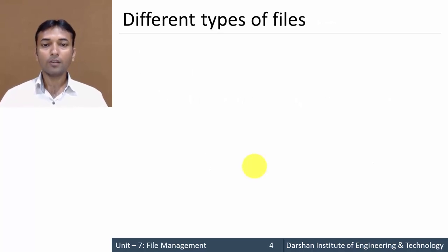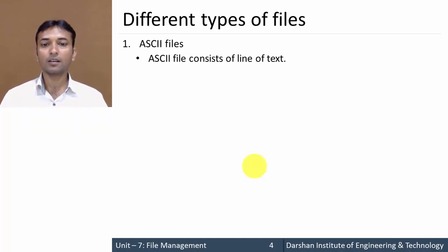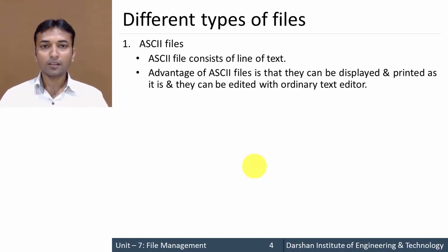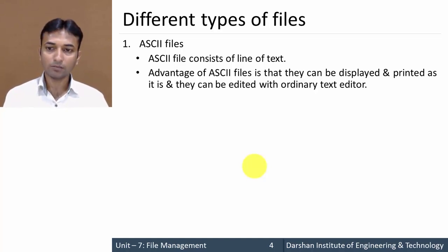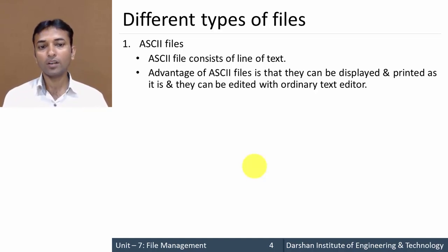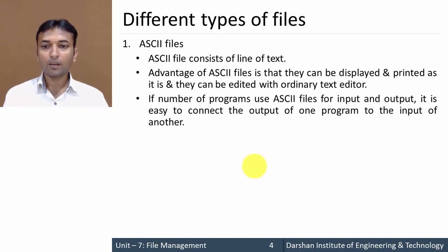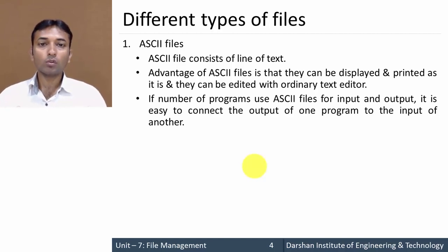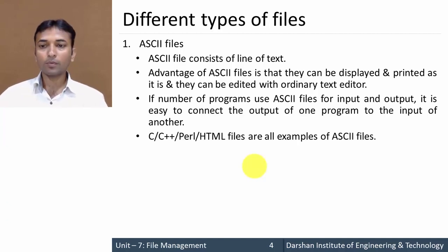Now moving further to the different types of files. The first one is ASCII file. An ASCII file contains lines of text — that is, these files contain simple text. The advantage of ASCII files is that they can be displayed, printed as-is, and edited with an ordinary text editor. If a number of programs use ASCII files for input and output, it is easy to connect the output of one program to the input of another.